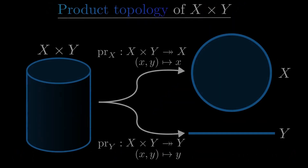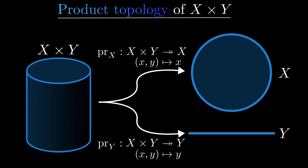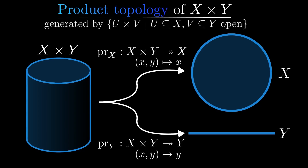The next example is the product topology. We are given two topological spaces x and y and want to define a topology on the Cartesian product. This is the initial topology induced by the two projections. The topology is also generated by the products of open sets.